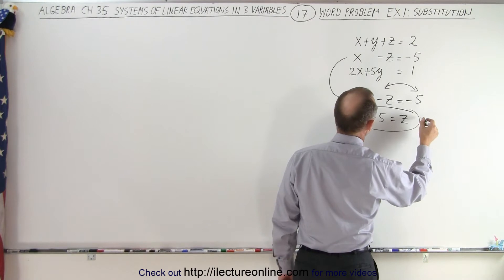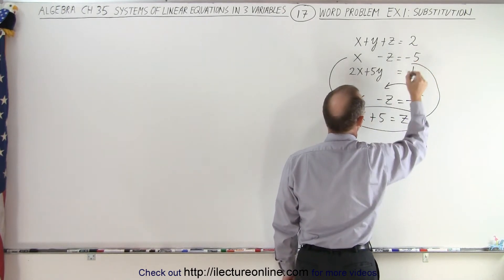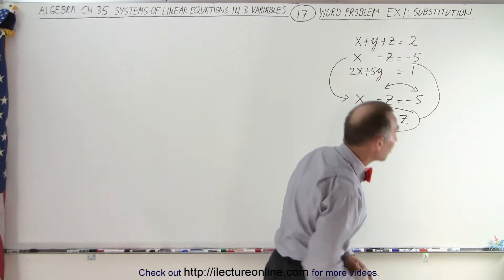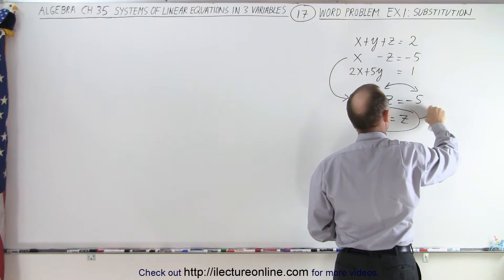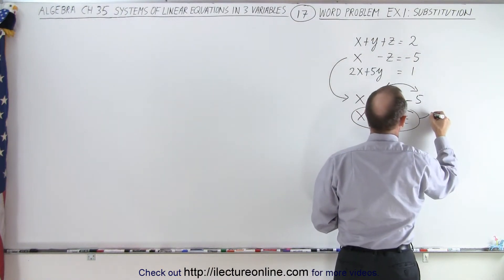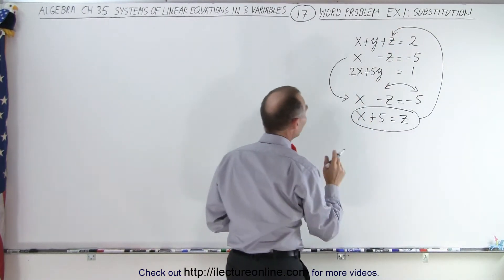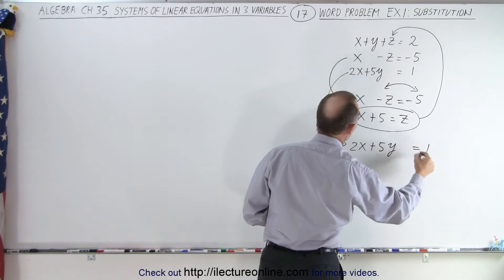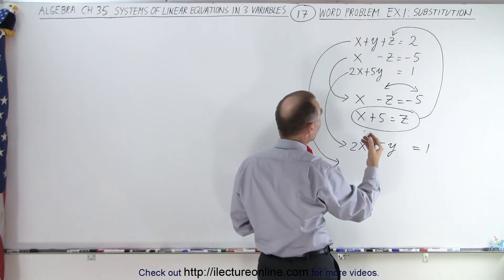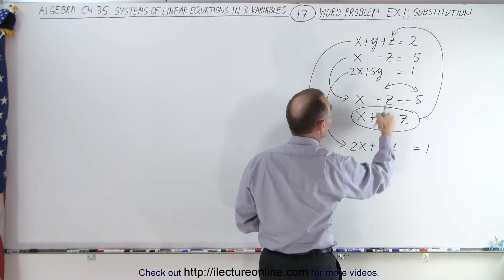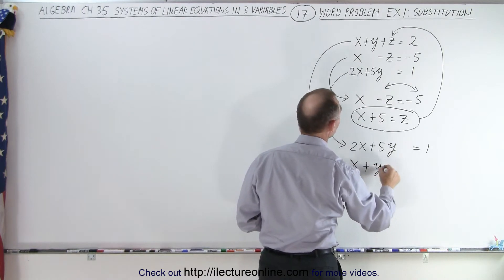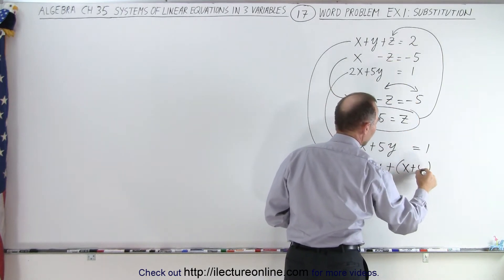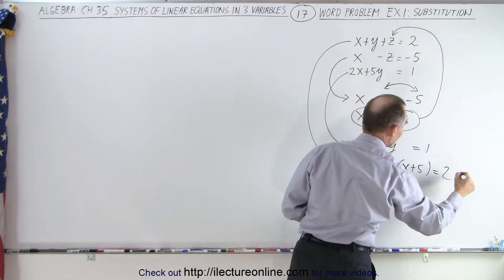And then what we can do, we can substitute that into the equations. Well, we don't need to substitute it into the third equation because there is no z there. So we don't have to eliminate z for the third equation, but we do have to eliminate z for the first equation. So we do need to eliminate z over here by substituting this in here for z. So the third equation already has the z eliminated. We have 2x plus 5y is equal to 1. But the first equation, we need to remove the z by eliminating it by replacing z by x plus 5. So we get x plus y plus, and instead of z, we're going to substitute that z by what z is equal to, which is x plus 5. And that is equal to the positive 2.